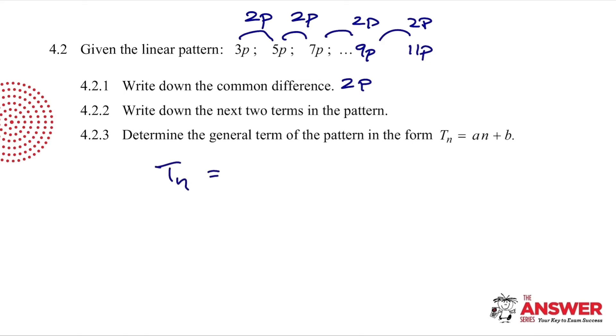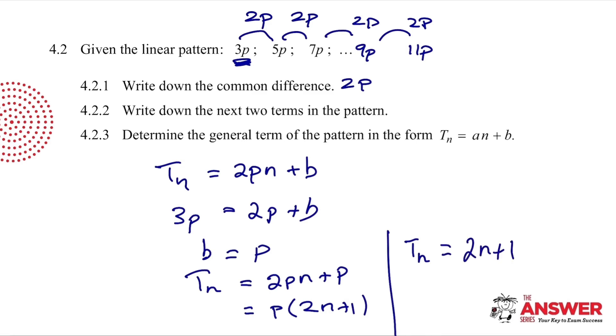And then to generate our terms, we are going to have a complicated coefficient of 2p in front of n plus b. Now, when we substitute 1 to achieve a result of 3p, we are going to get 2p plus b. So b simply has to equal p. So tn is equal to 2pn plus p. It's worth noting that if you take out p as a common factor, you get 2n plus 1, which is very similar to the formula we had in the previous question, where we had the answer as 2n plus 1.